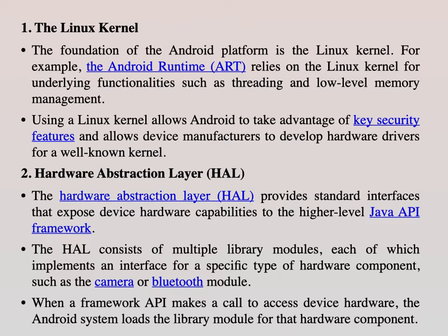For example, when you click the Wi-Fi button to enable it, the corresponding hardware device in your phone is identified, and the mapping between the library modules and the hardware component is done at that time. All functionalities with respect to the library modules for that particular hardware are provided by the Hardware Abstraction Layer.